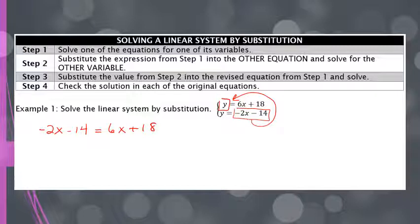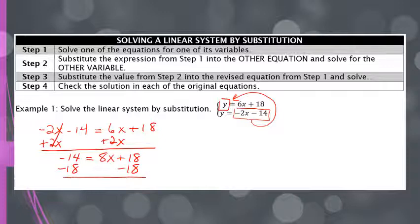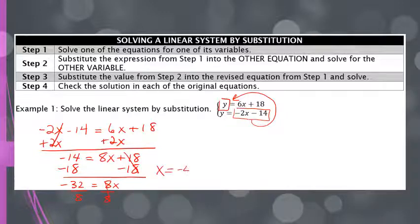Now I have to solve it. I like to get my x's on one side and keep them positive. So I'm going to add 2x to both sides, which leaves me with negative 14 equals 8x plus 18. Now I subtract 18 from both sides, leaving me with negative 32 equals 8x. Then I divide both sides by 8, and that gives me x equals negative 4.